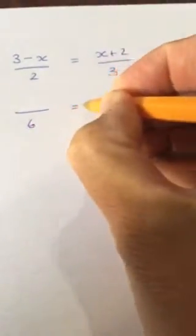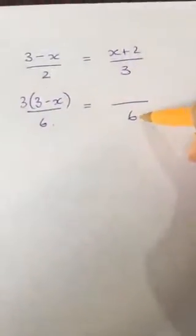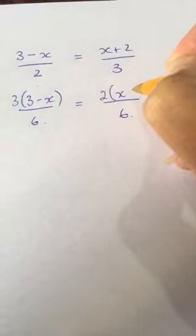So that's what I'm going to choose. To get from 2 into 6, I've multiplied by 3, so I have to times the top by 3. To get from 3 to 6, I have to multiply by 2, so I multiply the top by 2 also.